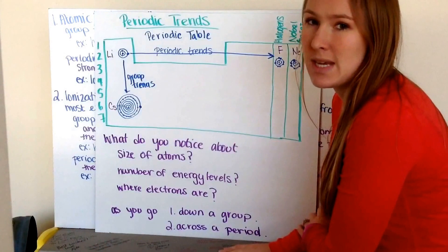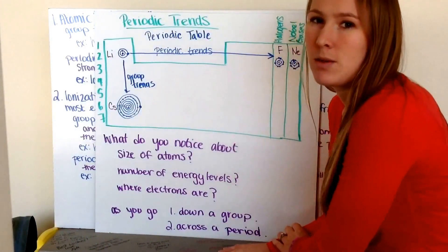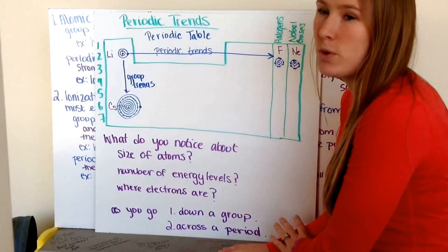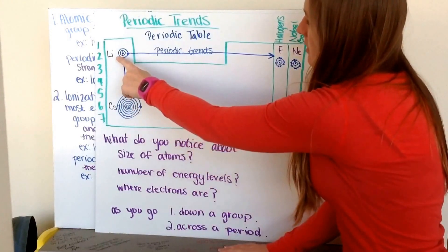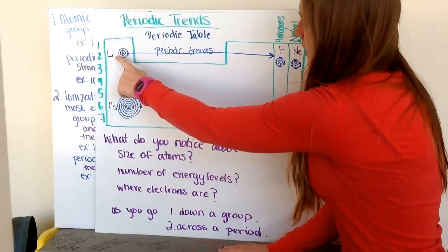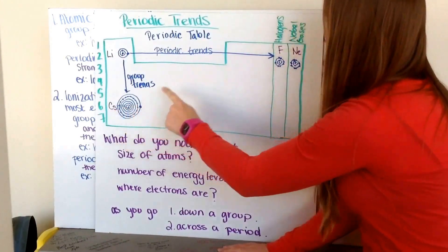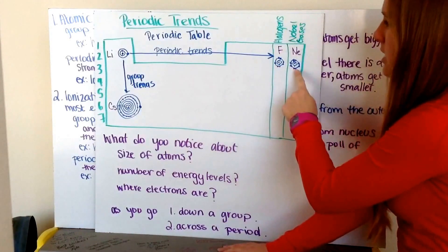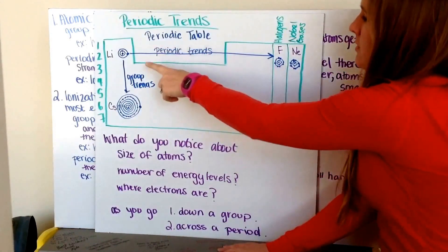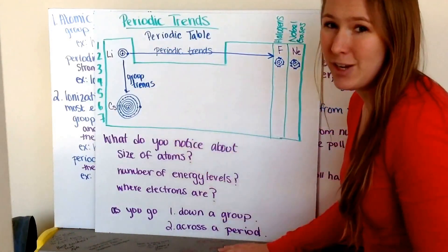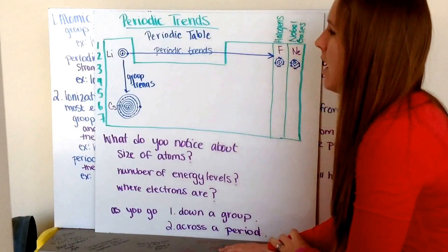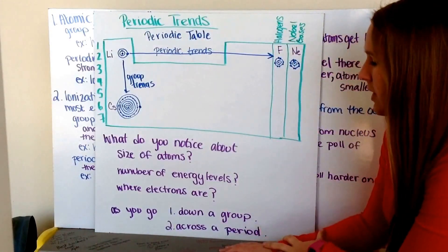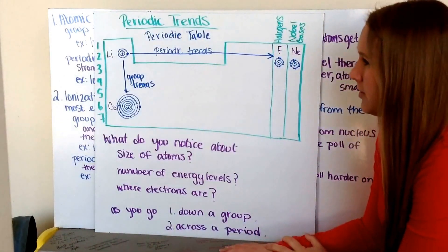Once you've sketched your periodic table, you want to make the Bohr models of the atoms for four different elements: first being lithium, then cesium, fluorine, and neon. All four of these have very different characteristics based on their size, number of energy levels, and where their electrons are.